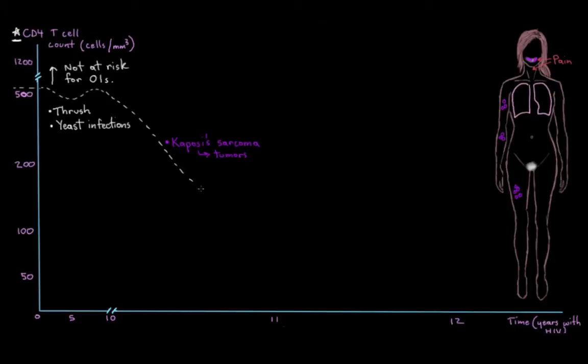If your CD4 count drops even further, to between 100 and 200 cells per cubic millimeter of blood, then you might develop some of the more severe opportunistic infections. For example, Pneumocystis jirovecii pneumonia, also known as Pneumocystis carinii pneumonia, or PCP. So this is a fungal infection of the lungs, and it causes a really severe chest infection. And in fact, this is most often the cause of death for someone with AIDS.